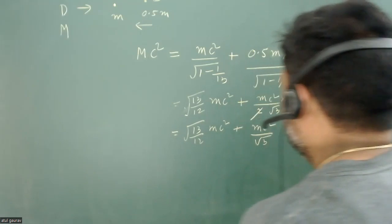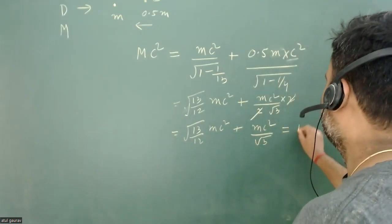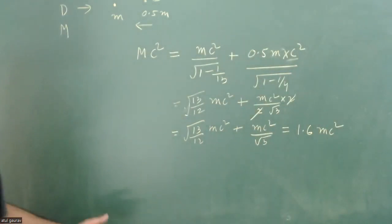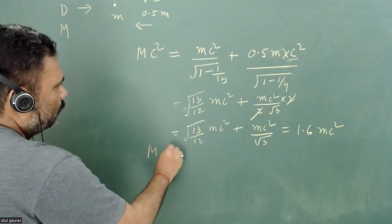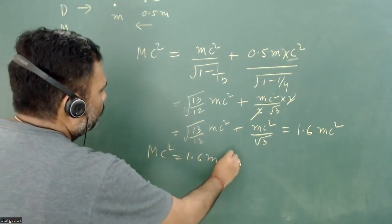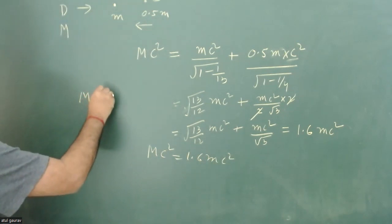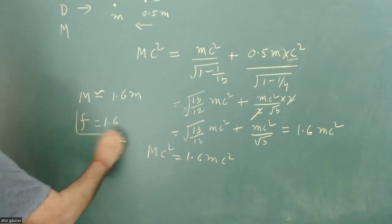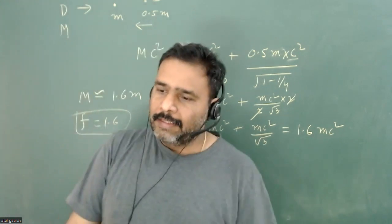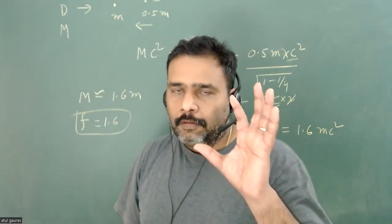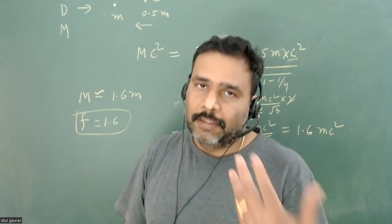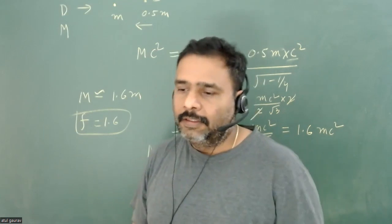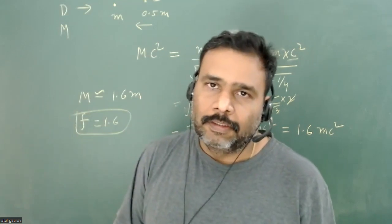When we calculate this number, it comes out to approximately 1.6 mc squared. So Mc squared equals 1.6 mc squared, meaning M is approximately 1.6m. The answer is that the factor is 1.6. The key lesson here: always use conservation of momentum first to check the actual momentum before and after the collision, and only then apply conservation of energy.